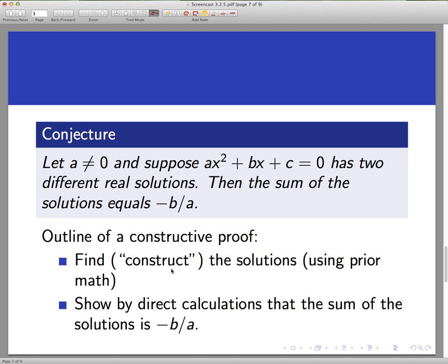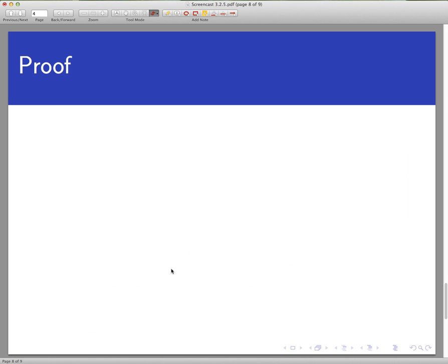We're going to build the item that the conjecture pertains to—the solutions—and then build the calculation and show that it comes out to equal what we say it does. So let's go over here and write a proof. This is not going to be done in a two-column table. I'm just going to sketch an outline of a proof here.